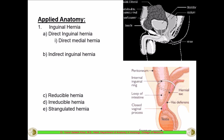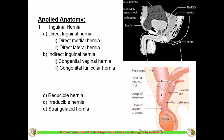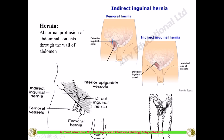Inguinal hernias pass through the inguinal ring and are located above the inguinal ligament. They are classified as direct or indirect. Indirect inguinal hernias are further divided into congenital, funicular, infantile, interstitial, and bubonocele types. To differentiate direct from indirect, one important landmark is the inferior epigastric artery, which comes from below and anastomoses with the superior epigastric artery. This artery serves as a key reference point for distinguishing the two types of inguinal hernias.